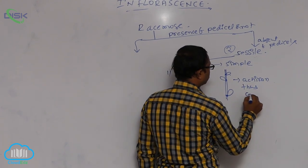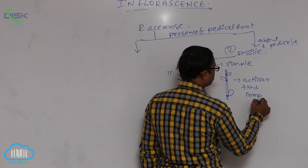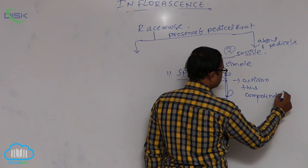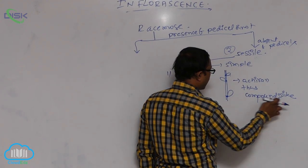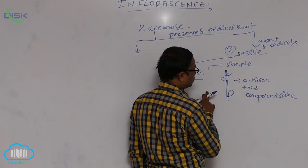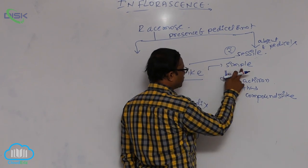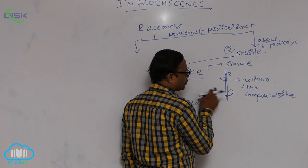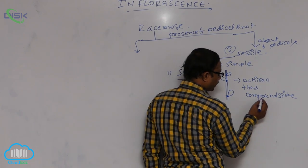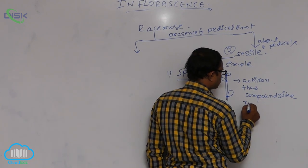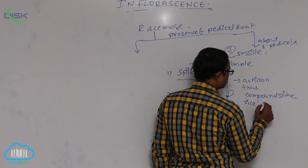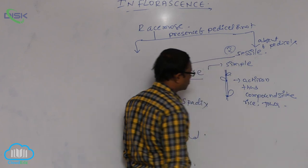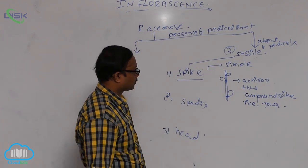Compound spike means spike having branches — that is known as compound spike. Simple spike means absent of branches. In compound spike, having branches — example is rice or Jawa (barley). All grass plants are examples. That is known as spike.